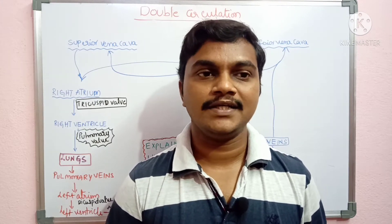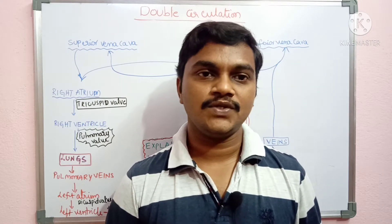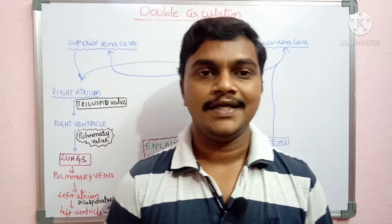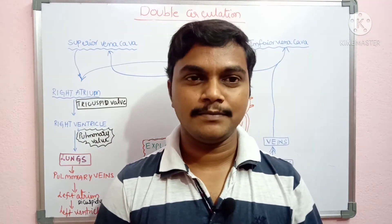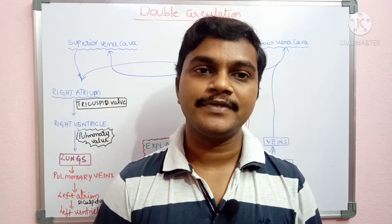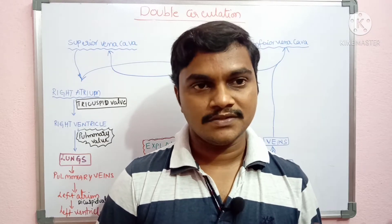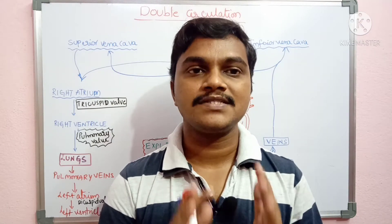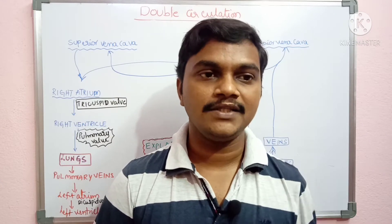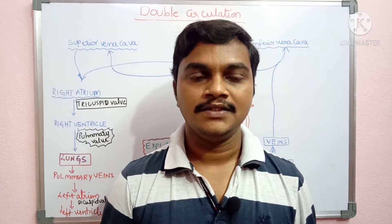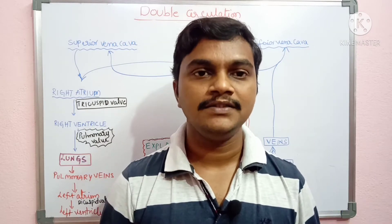Don't forget to like and share your opinion in the comments section. We are using a single and complete circulation to our body parts. Now we are using double circulation to our organs, and by double circulation, the complete double circulation is achieved. In order to apply the oxygenation to body parts, we must also apply the oxygenation.